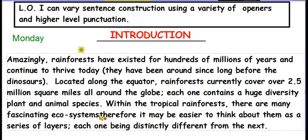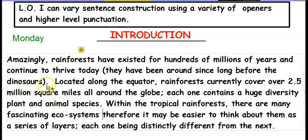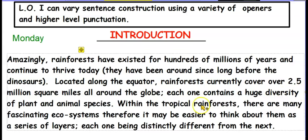Within the tropical rainforests there are many fascinating ecosystems. Therefore, it may be easier to think about them as a series of layers; each one being distinctly different from the next. Hopefully you spotted the use of brackets, hyphenated words like 'ecosystems', and semicolons to link two independent clauses together. Located along the equator, rainforests currently cover over 2.5 million square miles all around the globe; each one contains a huge diversity of plant and animal species. Within the tropical rainforests there are many fascinating ecosystems; therefore it may be easier to think about them as a series of layers; each one being distinctly different from the next — so lots of punctuation being used in today's writing.